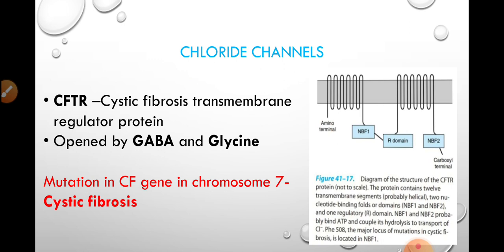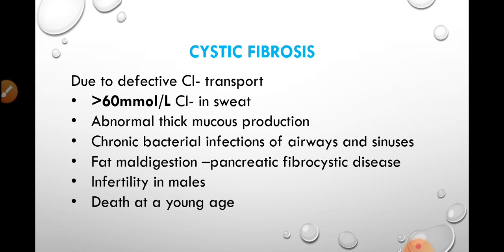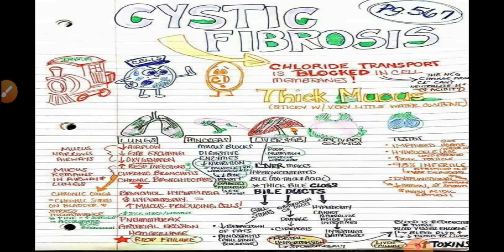Cystic fibrosis is due to defective chloride transport. The level of chloride ions in sweat is above 60 millimoles per liter. The patient presents with abnormal thick mucus production and chronic bacterial infections of the airways and sinuses, affecting the pulmonary and respiratory tracts. There will be fat maldigestion due to pancreatic fibrosis, and the liver and gallbladder are also affected, leading to lowered bile production and abnormal fat digestion. There is also infertility in males due to underdevelopment of the vas deferens, and progressively it leads to death at a young age.